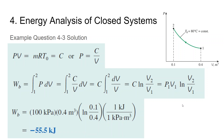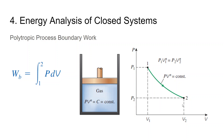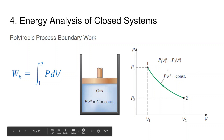Next, polytropic process boundary work. A polytropic process follows the equation p₁V₁ⁿ = p₂V₂ⁿ. We use it because in the real world gas expansion and contraction follow this equation very closely.